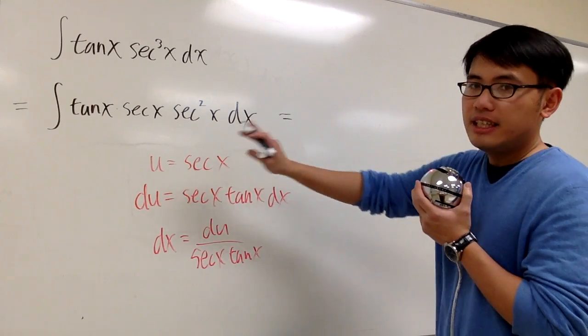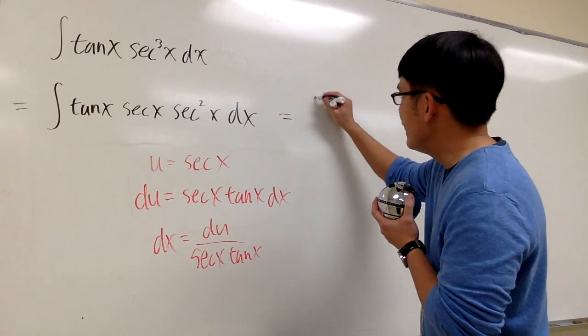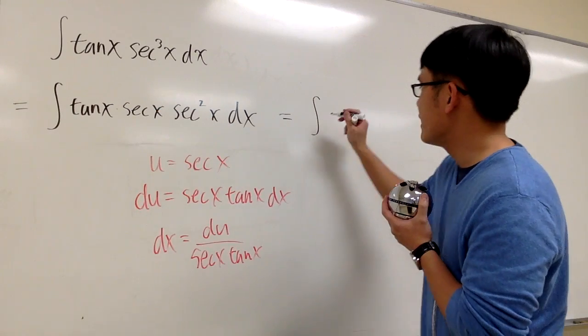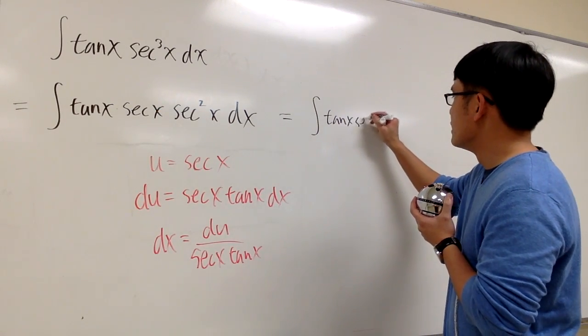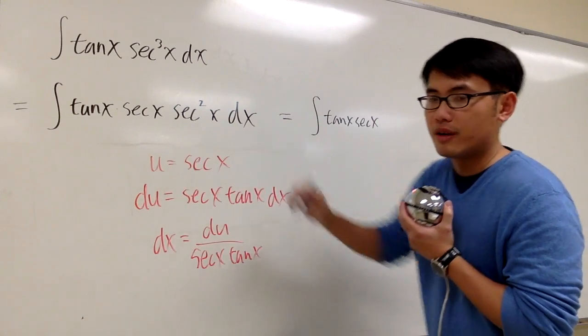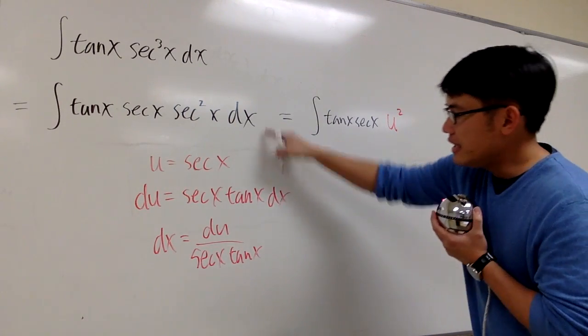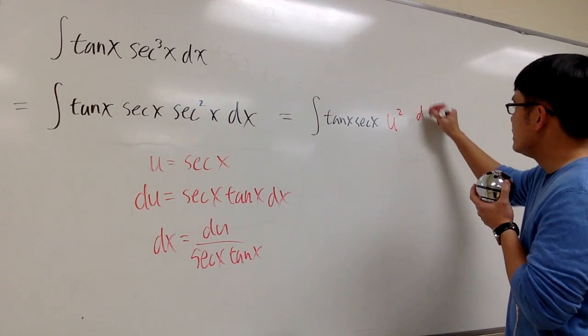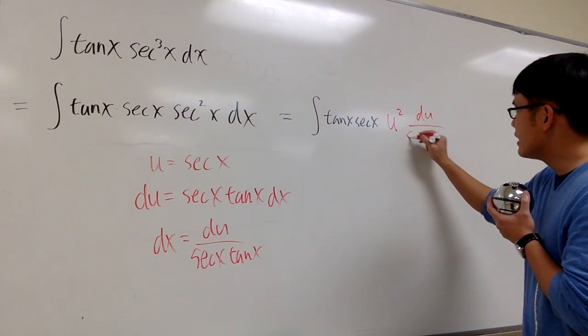And now, if you take this integral into the u world, you will get integral of tangent x secant x, tangent x, secant x, and then this secant, let me write it as u squared. So we have the u squared, and the dx is du over that, du over secant x tangent x.